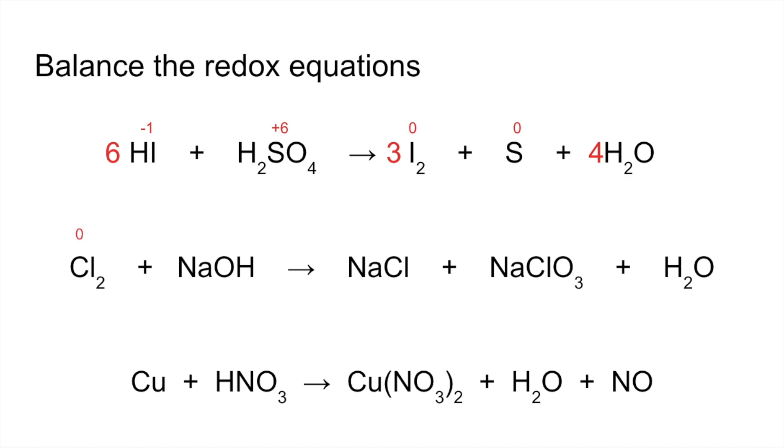The chlorine starts at 0, goes to negative 1 and plus 5. Effectively we need this to be negative 5 to match with that change of plus 5, so we put a 5 in front of it.